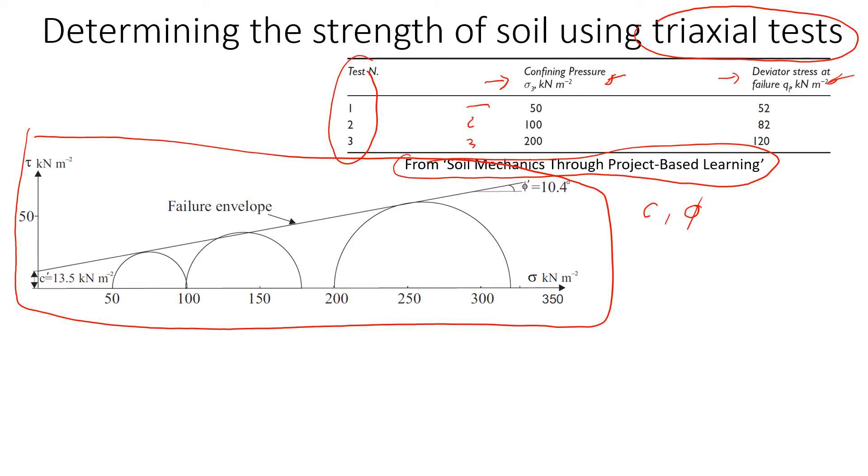The first thing that we need to do for each test is find the principal stresses sigma 1 and sigma 3. Sigma 3 is given as the confining pressure, so this is already sigma 3.